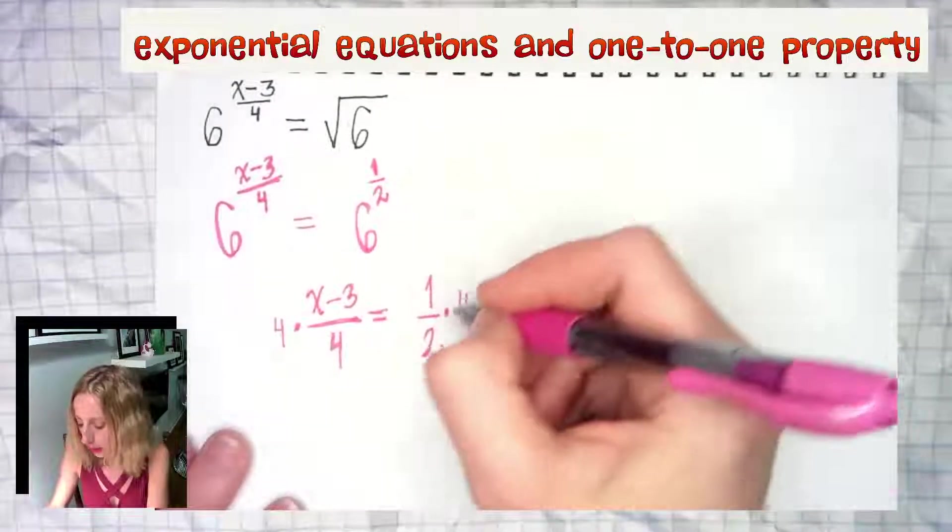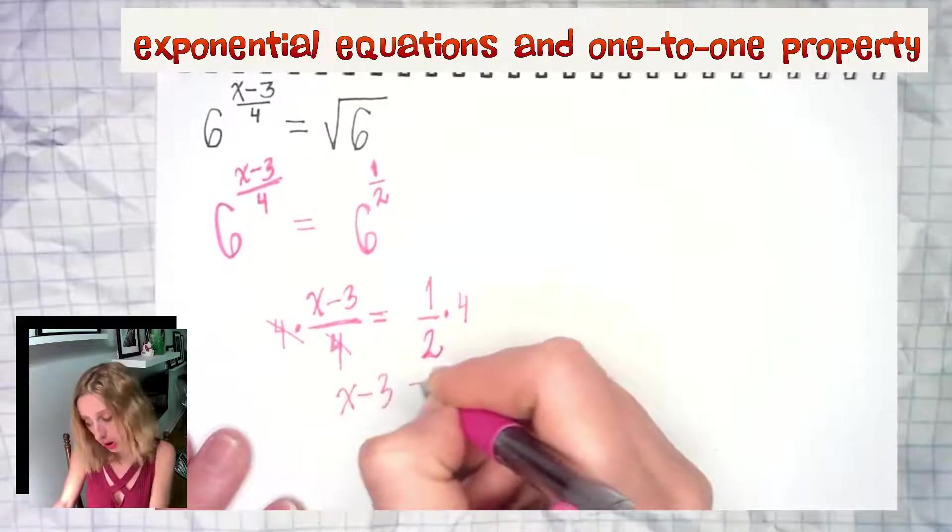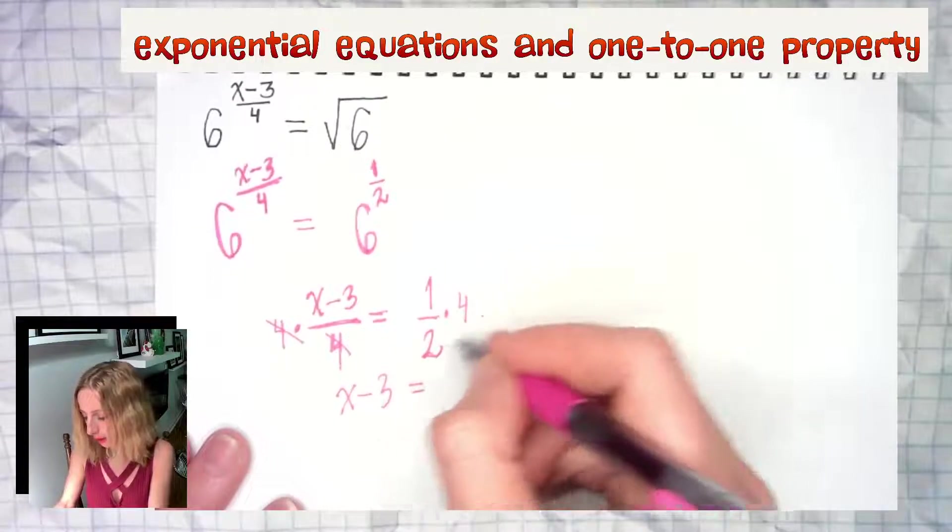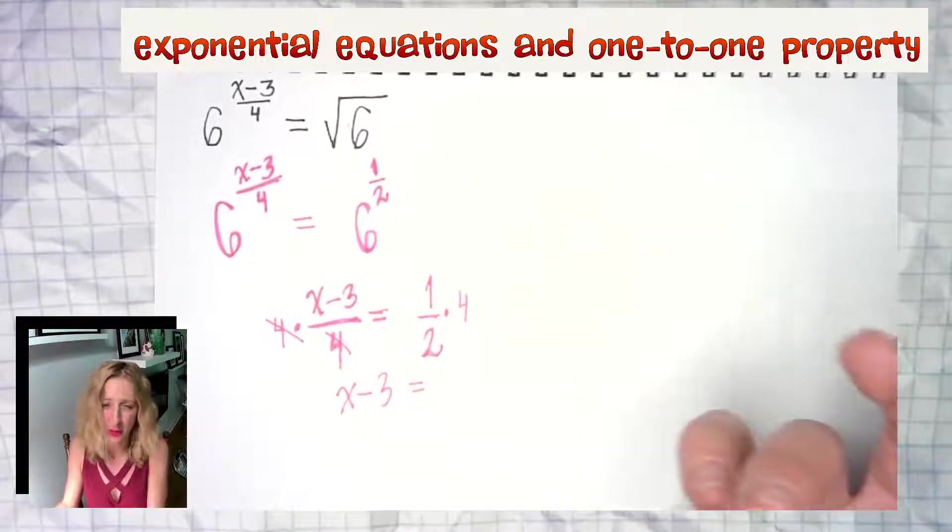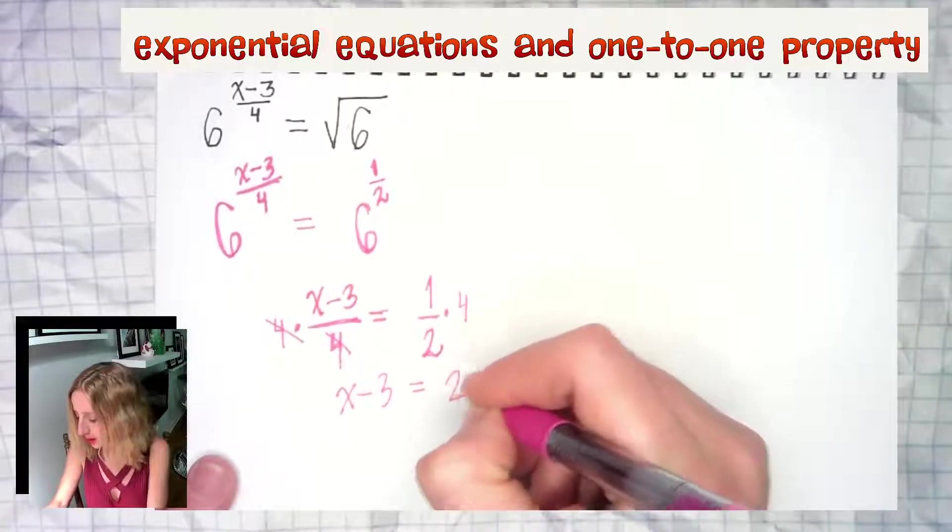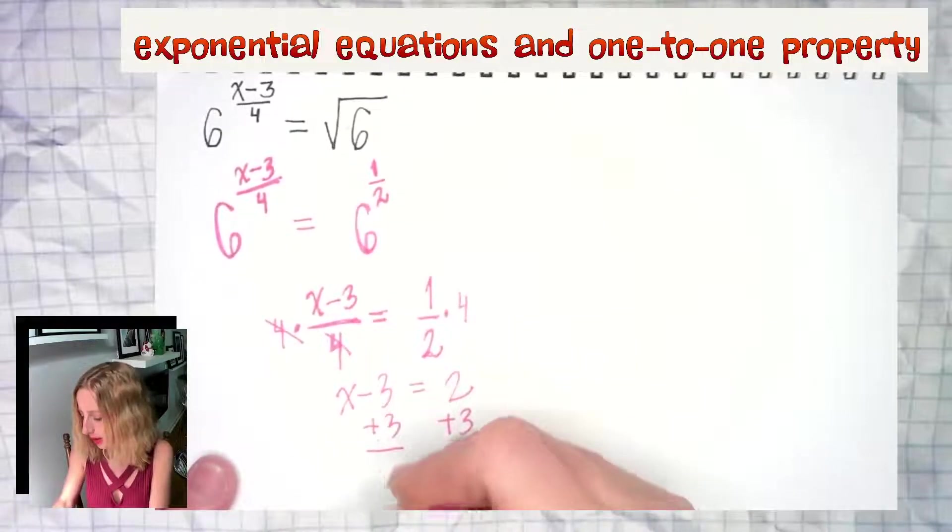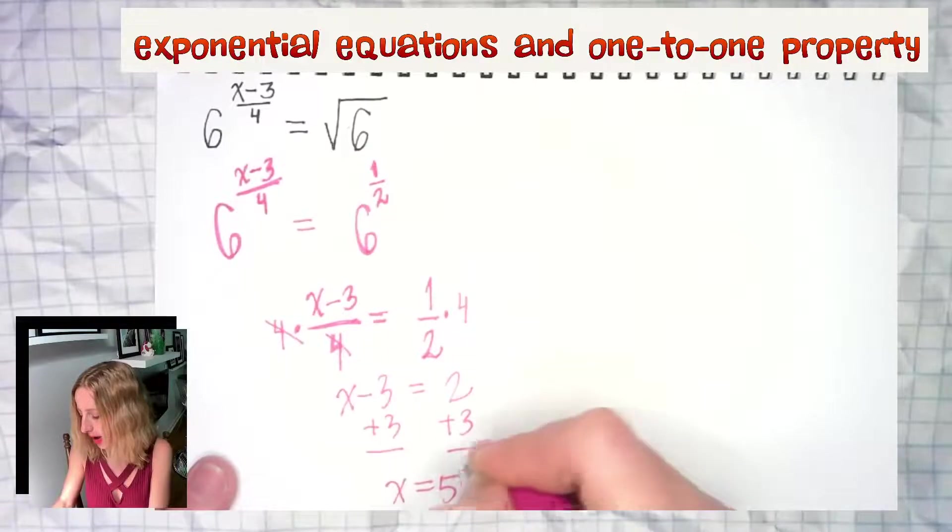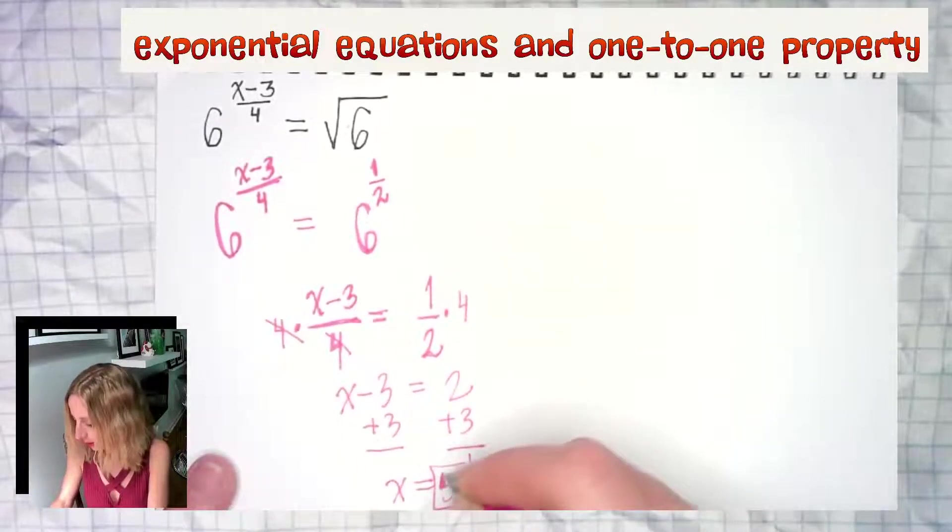x minus three is the only thing left on the left, and one half times four is two. Be big boys and girls, we got this. Add three to each side: x equals five. Boom! There you have it, there's your answer.